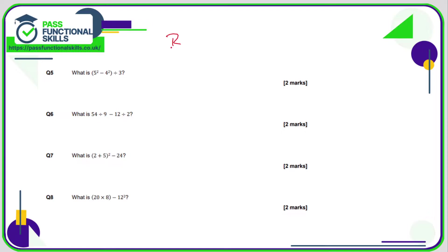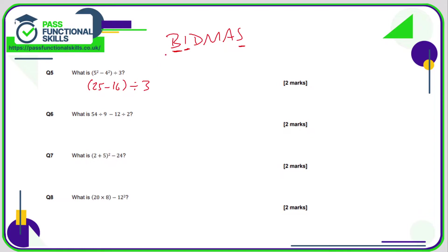Question 5 — it's always helpful to write BIDMAS down. Here we have brackets, so we do the brackets first. Inside the brackets we have indices and subtraction, so we do the indices first: 5 squared is 25, 4 squared is 16. So inside the brackets we have 25 minus 16, and we do the brackets before the division. 25 take away 16 is 9, and 9 divided by 3 is 3.